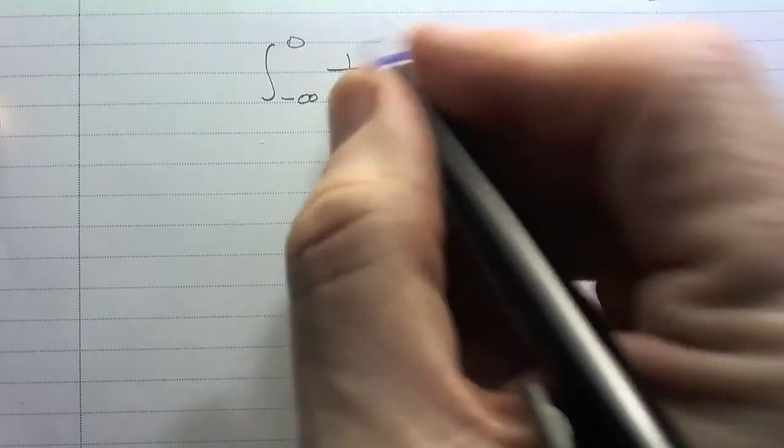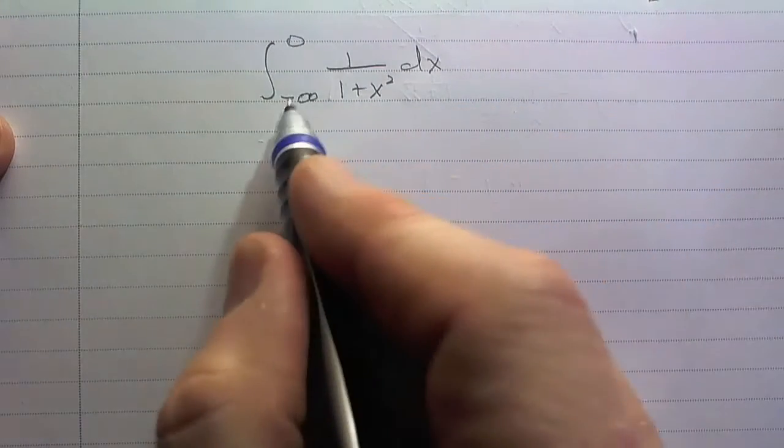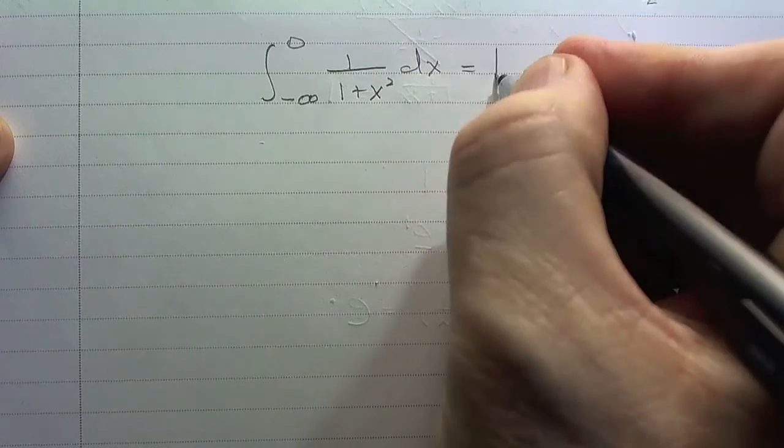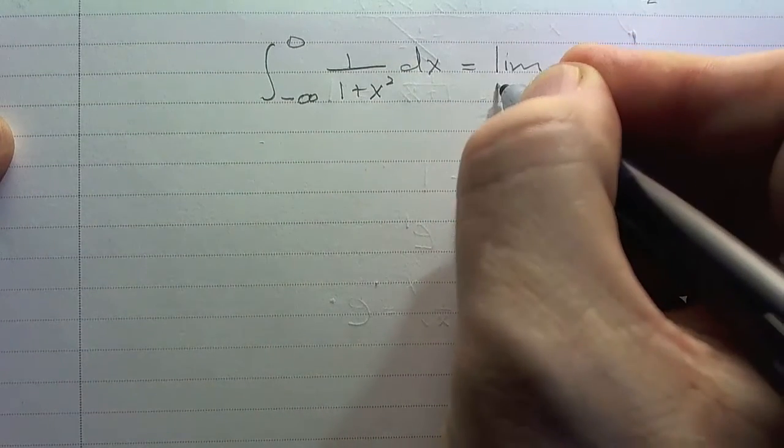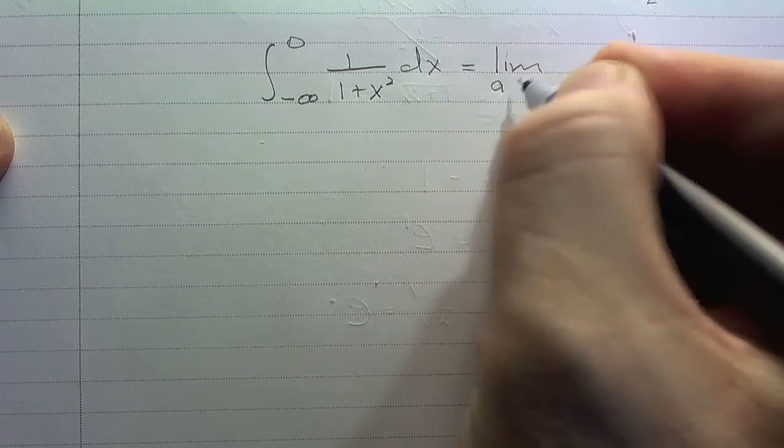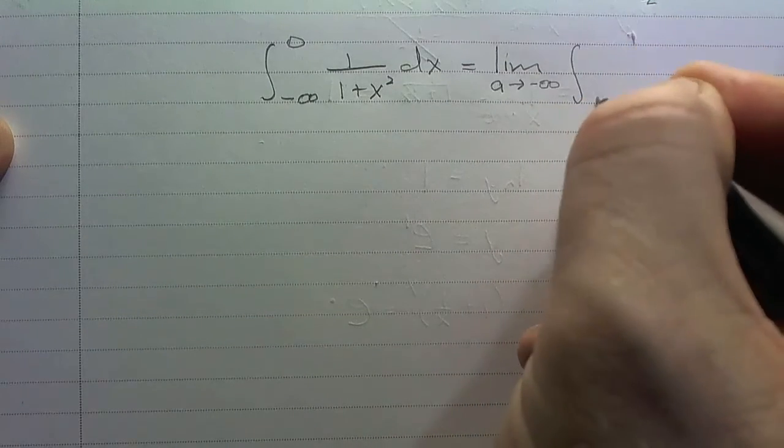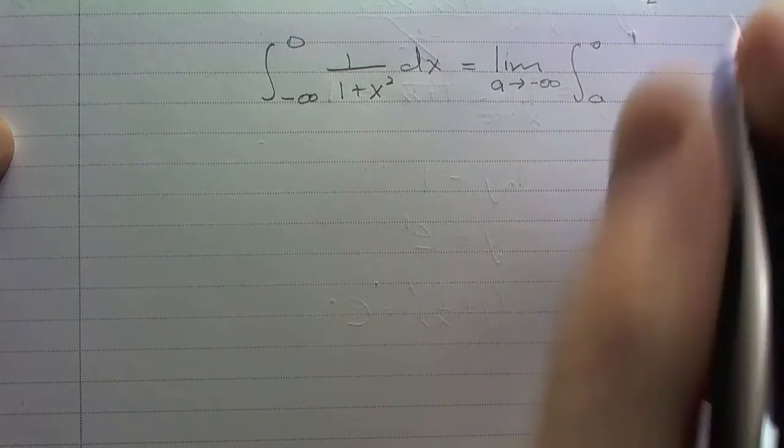So, in other words, we could have – instead of starting at 0 and going to infinity, we could have come from negative infinity to 0. Well, we work this problem the same way. We're going to take the limit – let me call it a this time – as a goes to negative infinity of the integral from a to 0. See?